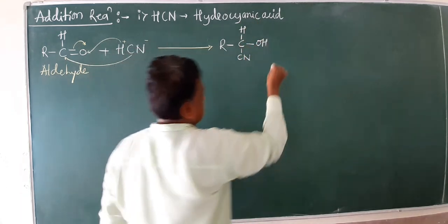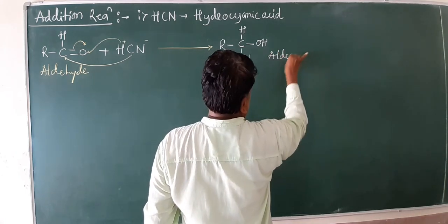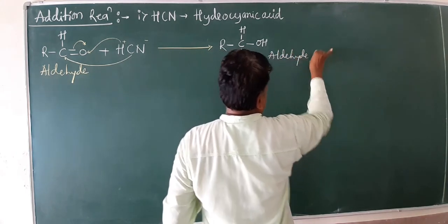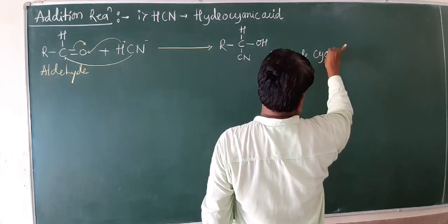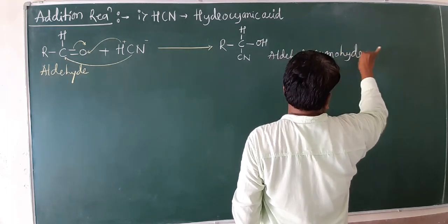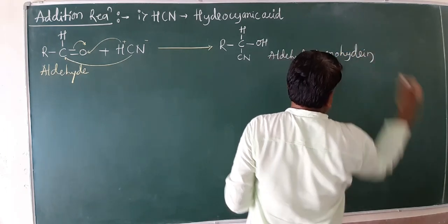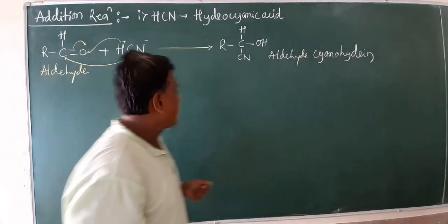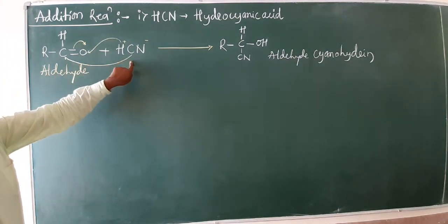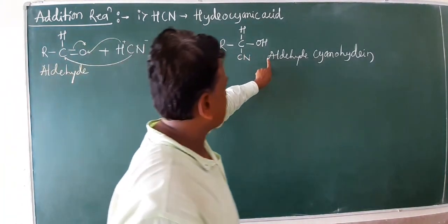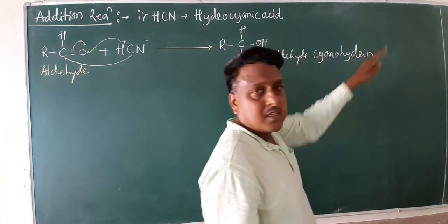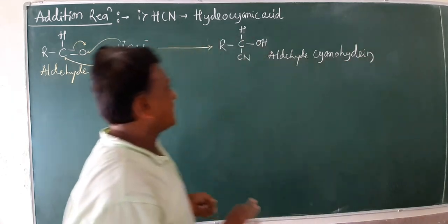The name of this compound is aldehyde cyanohydrin. When aldehyde reacts with hydrogen cyanide, the addition product formed is called aldehyde cyanohydrin.